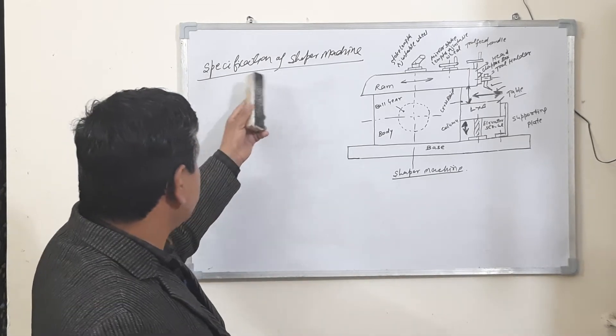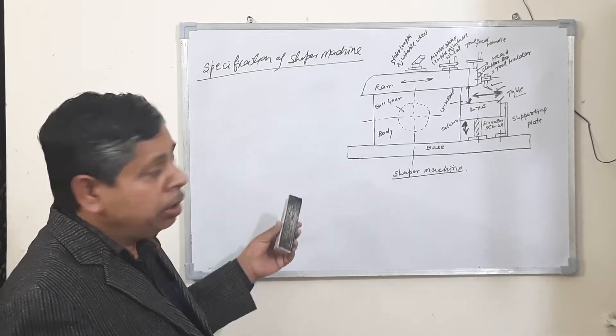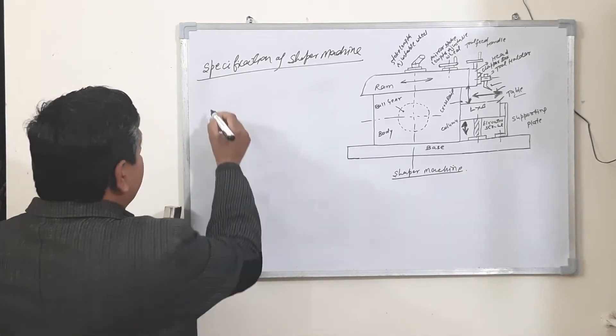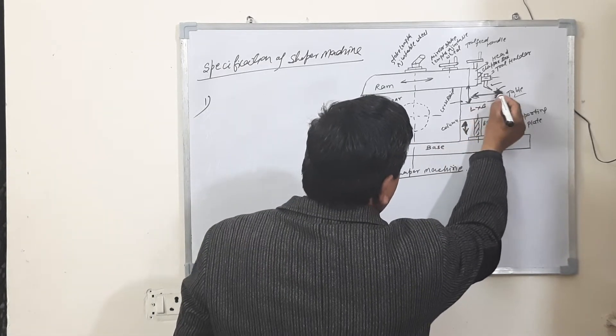Now we are coming to the specifications of shaper machines. The following specifications are given below. Number one: the maximum stock length covered by the cutting tool.